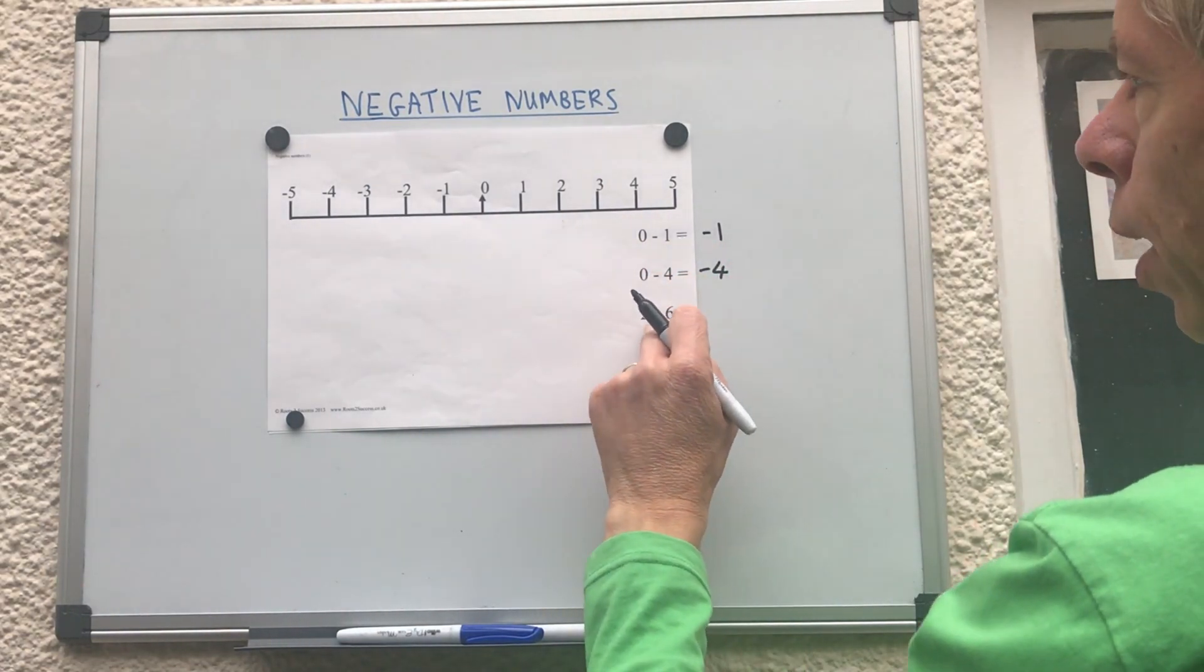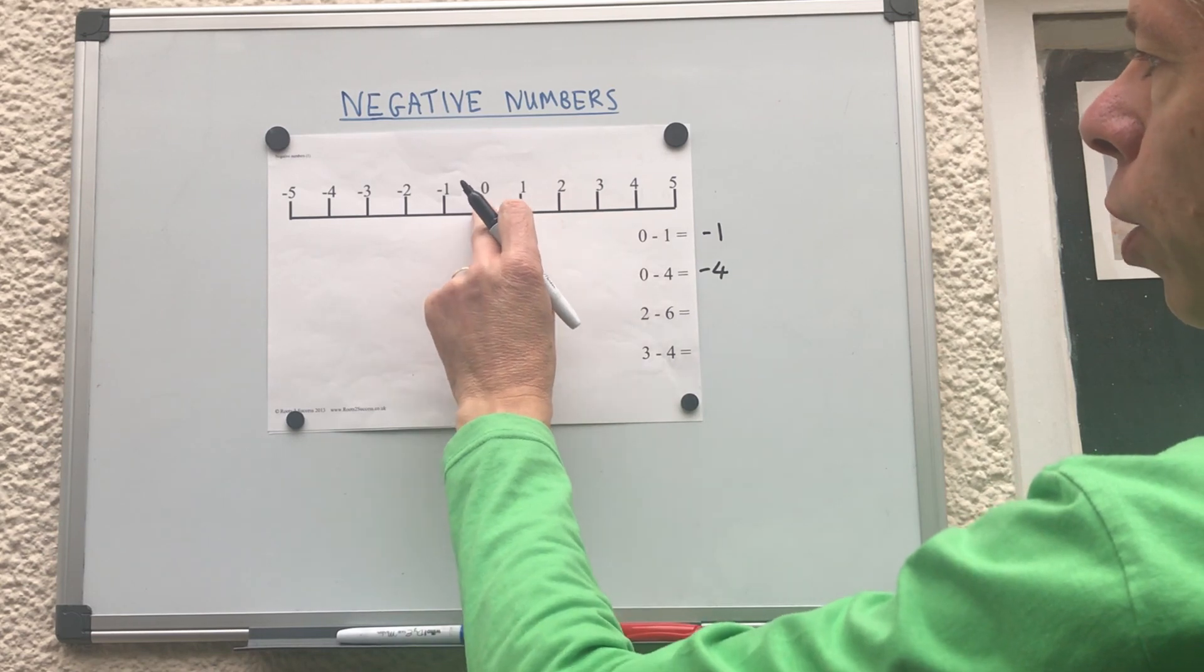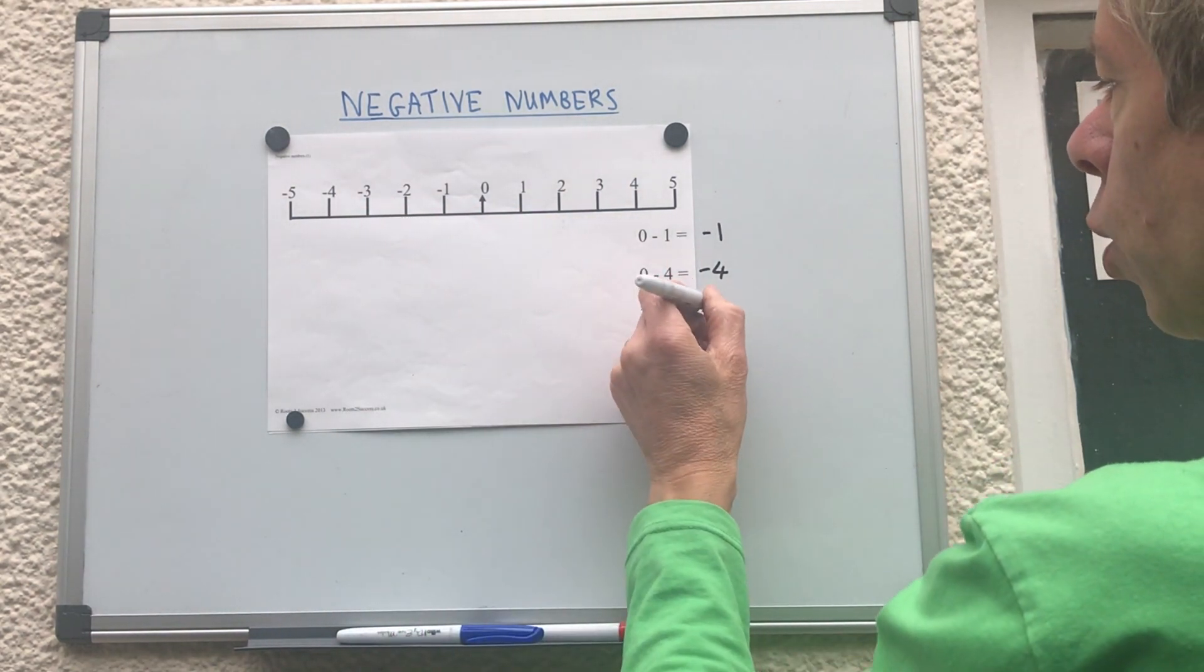Two take away six, so start at two, go back six steps, one, two, three, four, five, six, will give us minus four.